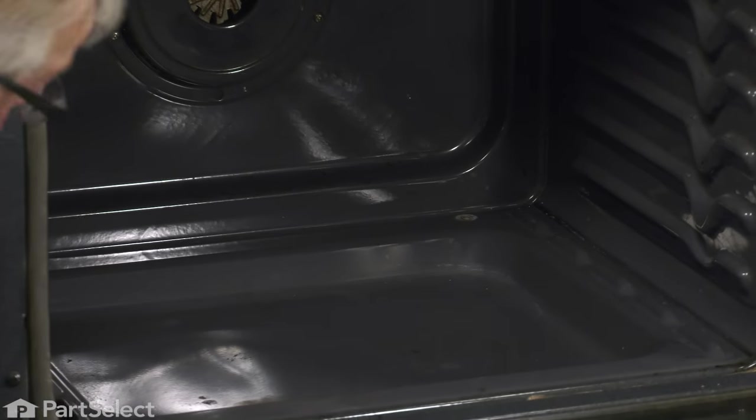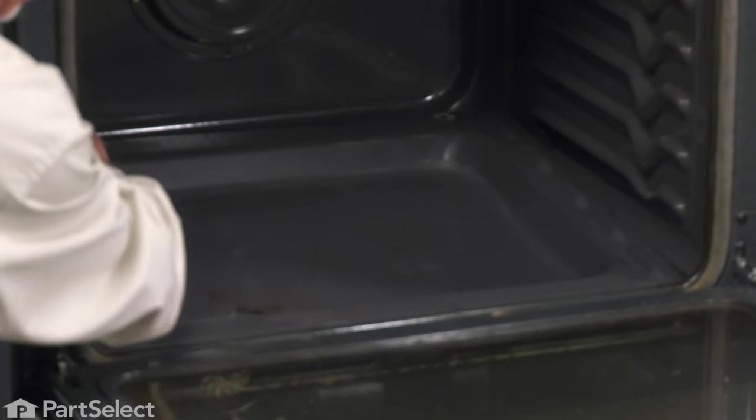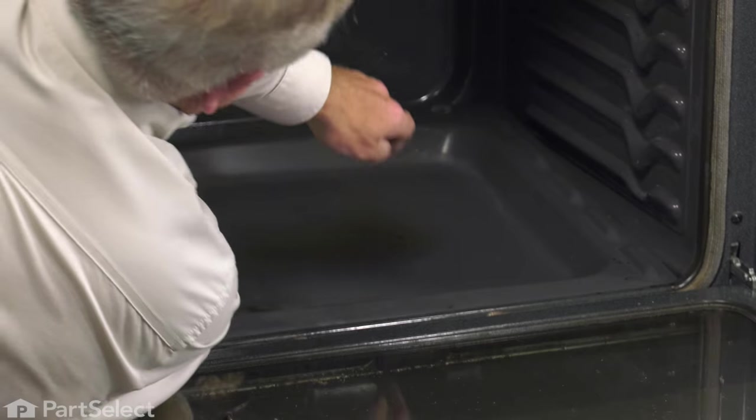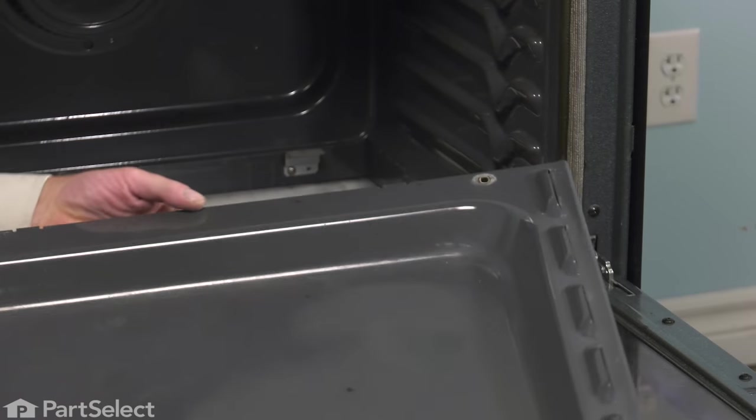With the screws removed, we're next just grasp the sides of that oven bottom, tilt it up at the back. Then just pull it slightly towards the back. We'll disengage the lip at the front and then we can lift it completely out.